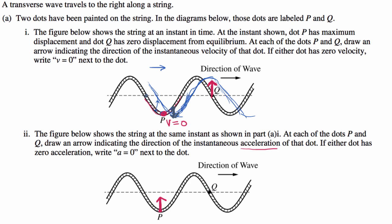What about at point Q? Everything in the region to one side of Q has an upward acceleration, and everything on the other side has a downward acceleration. Point Q is at that transition point where we go from downward acceleration to upward acceleration. So right at that point, at this moment, the acceleration is zero. We write acceleration equals zero.